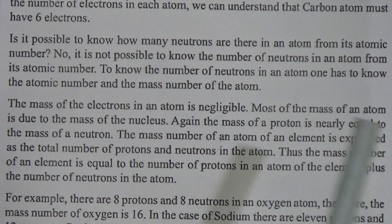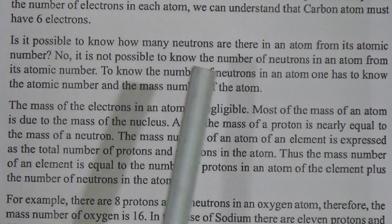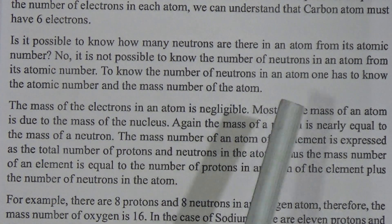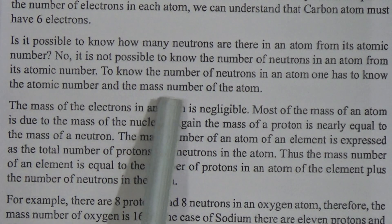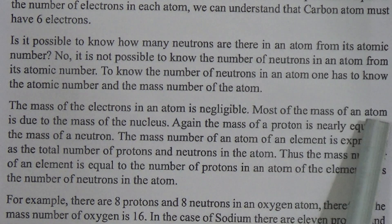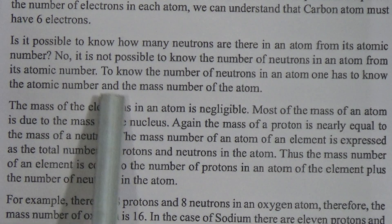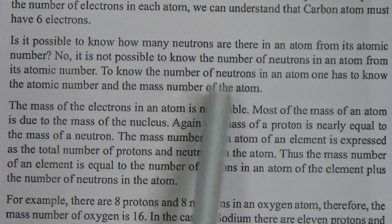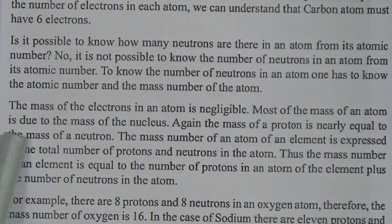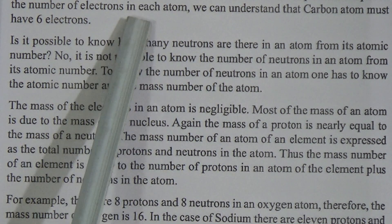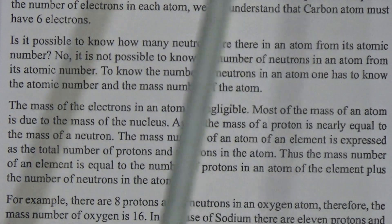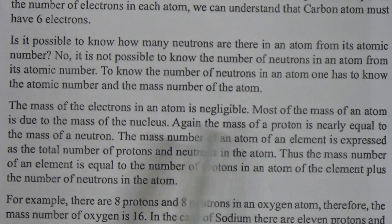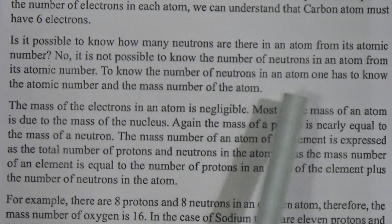Is it possible to know how many neutrons are there in an atom from its atomic number? No, it is not possible to know the number of neutrons in an atom from its atomic number alone. To know the number of neutrons in an atom, one has to know both the atomic number and the mass number of the atom. From the atomic number we can say how many electrons and protons are present, but to know the number of neutrons we have to know the mass number.